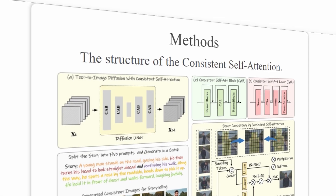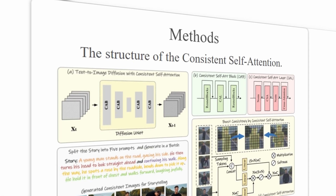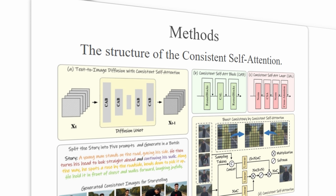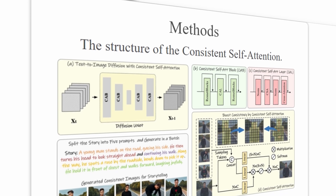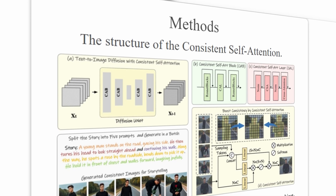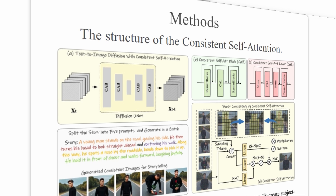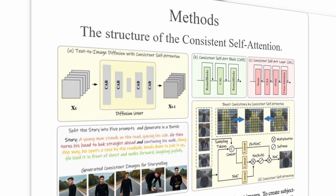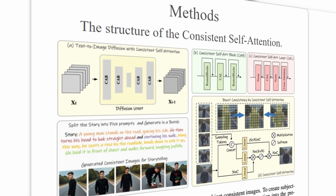Story Diffusion is able to achieve such high levels of character consistency through two key techniques: consistent self-attention and story splitting. It uses consistent self-attention to enhance the visual coherence between generated images.